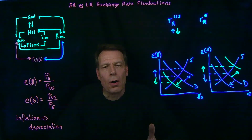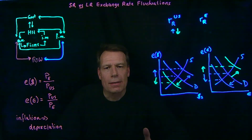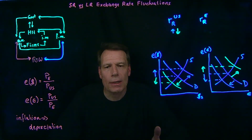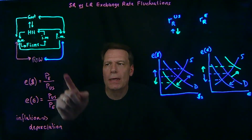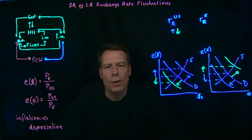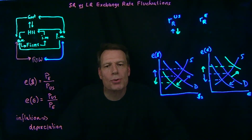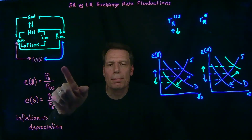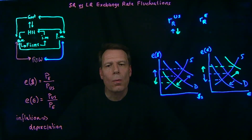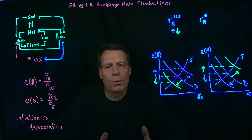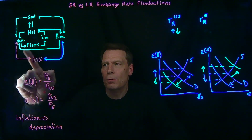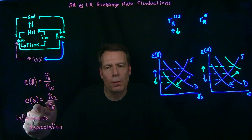So the law of one price implies that real rates of return across countries have to equalize, and that can happen quickly because of how quickly we can make financial transactions on this side of the circular flow diagram. That means short-run fluctuations in exchange rates are driven primarily by what happens in financial markets, whereas the long-run exchange rate is anchored by purchasing power parity in output markets.